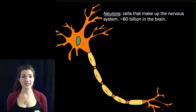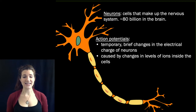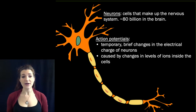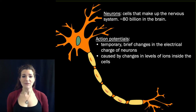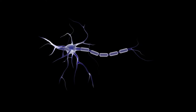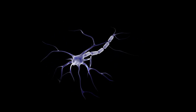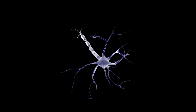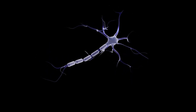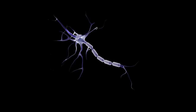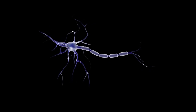The nervous system is made up of these individual neurons. The code that they carry is called an action potential — a temporary, brief change in the electrical charge of the neuron caused by changes in the levels of ions inside the cell. You often hear action potentials described colloquially as a neuron firing. It is, in fact, carrying a signal and a charge from one end of the neuron to the other, and when it reaches the end of a neuron, information about that signal can be transmitted to other neurons, so neurons can communicate and send information throughout the body and within the brain.